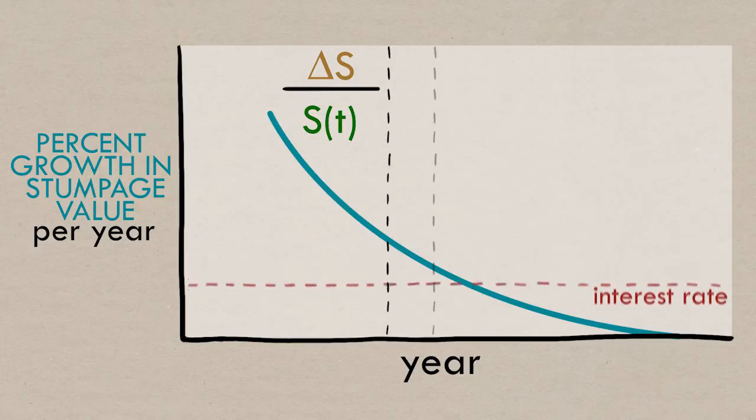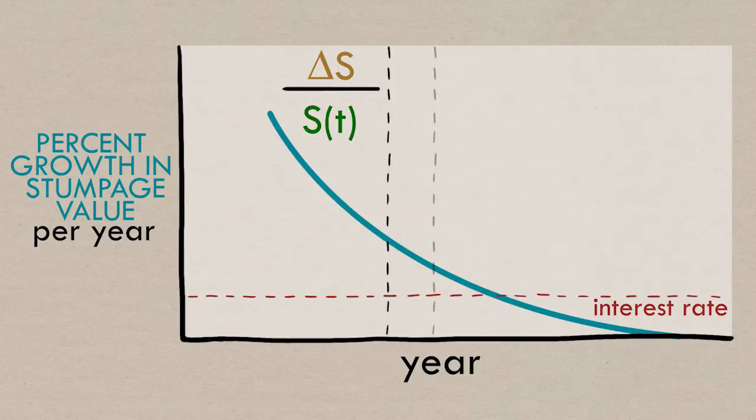If the interest rate was lower, the opposite situation, the rate the stumpage value grows at is relatively greater, so we want to keep the forest growing.